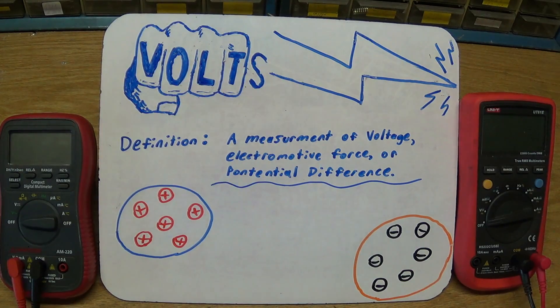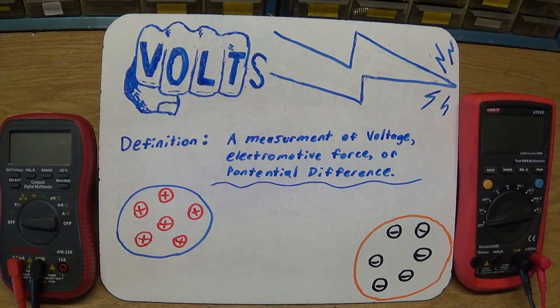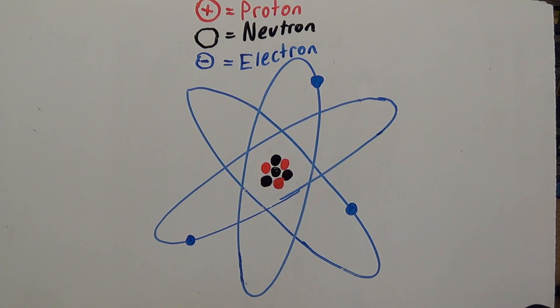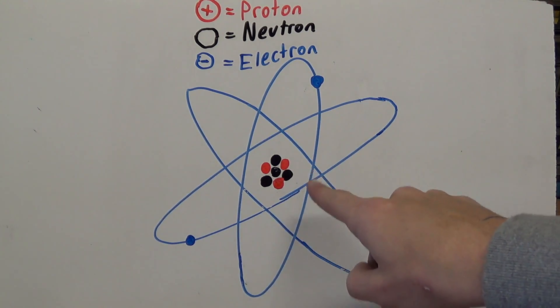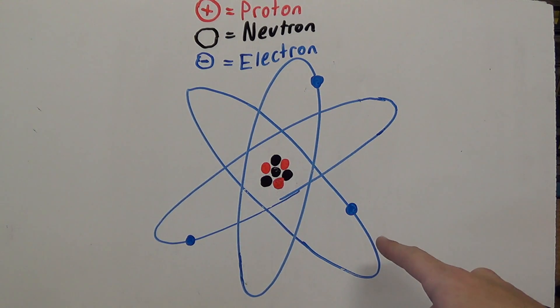Now, to understand how these charges can exist, we need to understand a little bit about atoms. As you know, all matter is made up of atoms, with a few exceptions. Here I've drawn a basic lithium atom, and you can see that there's three protons, three electrons, and four neutrons, and that makes up a basic atom, such as lithium.